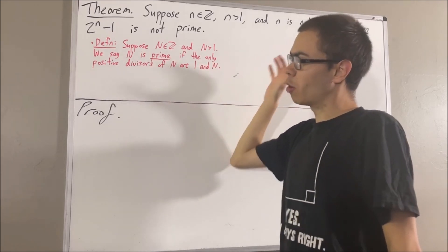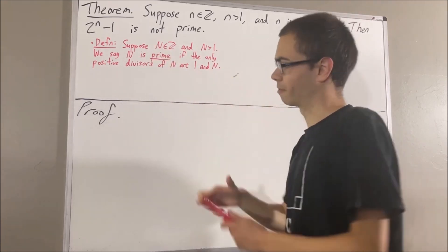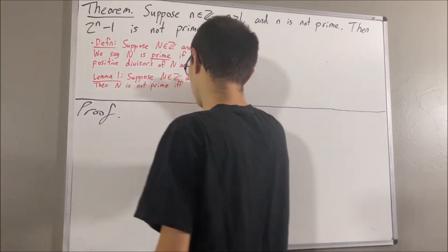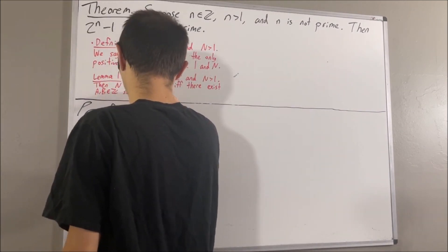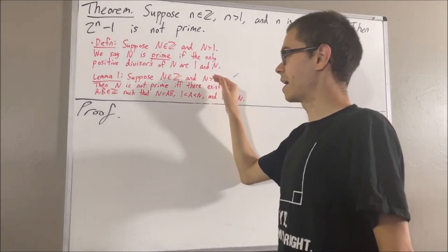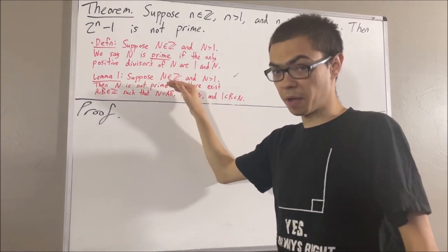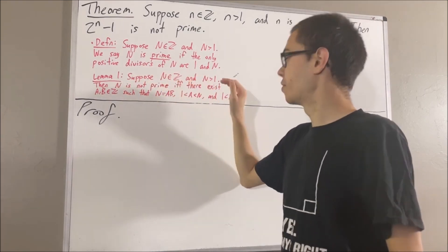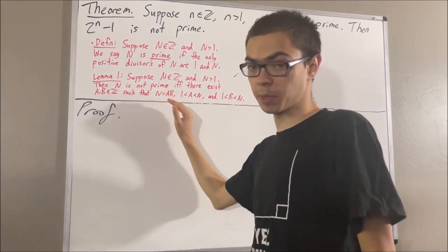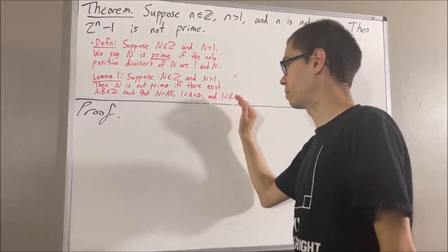Now, a result that follows from this definition is the following. Suppose n is an integer and n is greater than 1. Then n is not prime if and only if there exist integers a and b such that n is equal to a times b, where 1 is less than a is less than n and 1 is less than b is less than n.